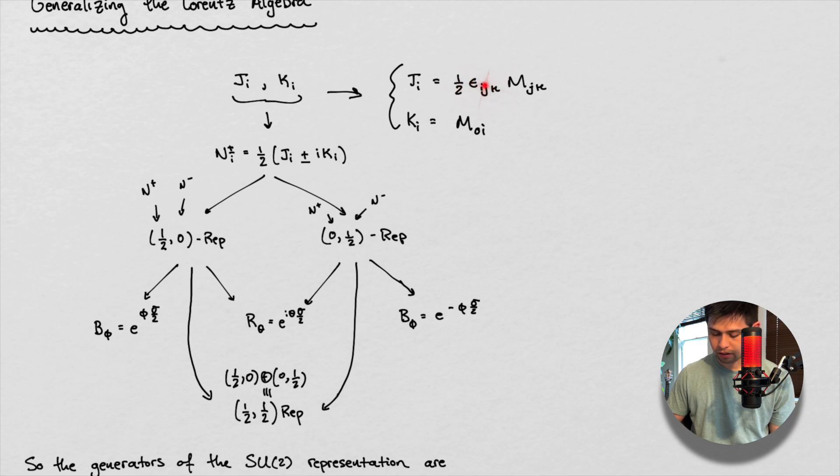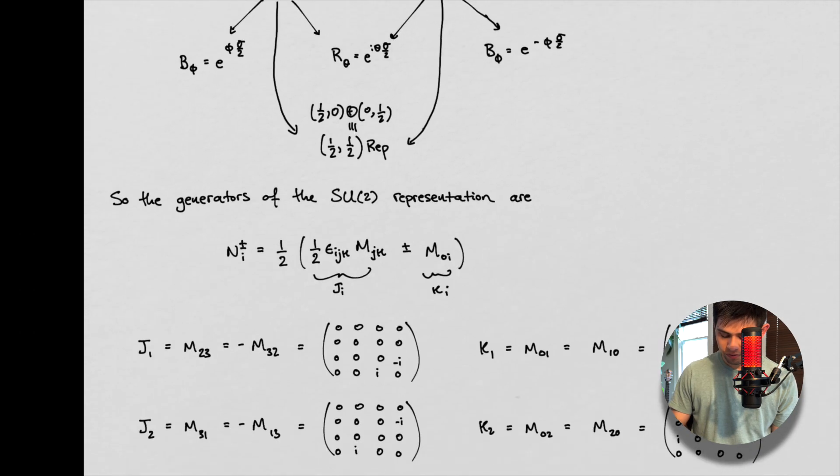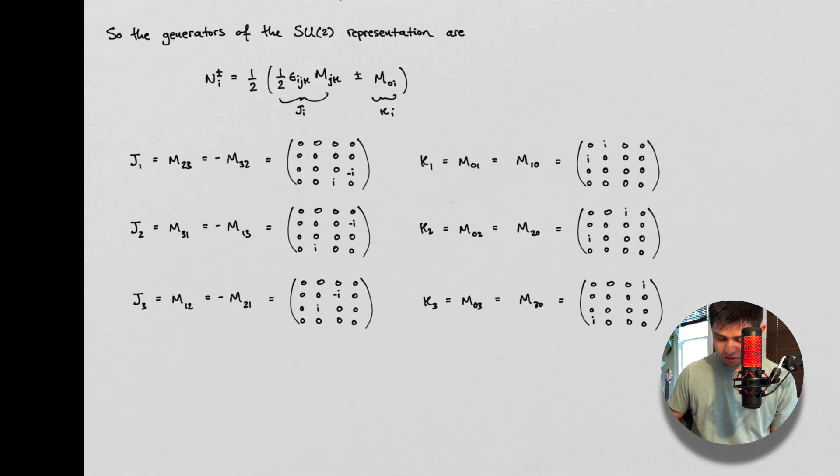And what we find is that this is what our generators look like. So j1 is equal to m 2, 3, or the negative of m 3, 2. So the matrix right there looks like this. And then we can do the same thing. j2 is a matrix element, 3, 1, or the negative 1, 3. And likewise here. So j3.